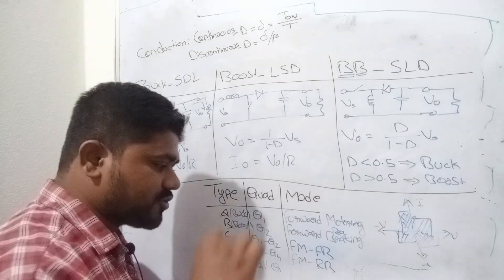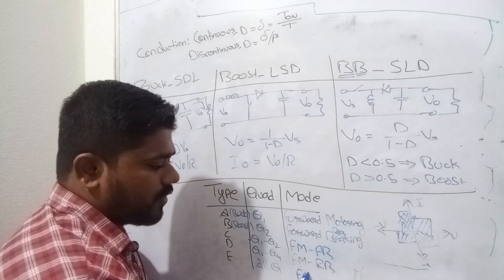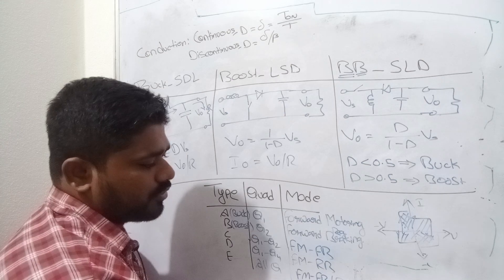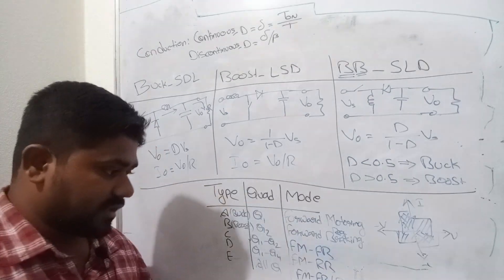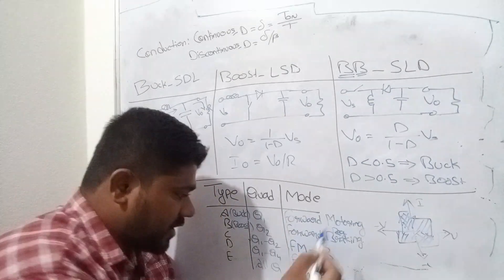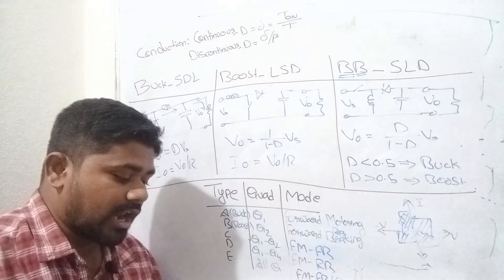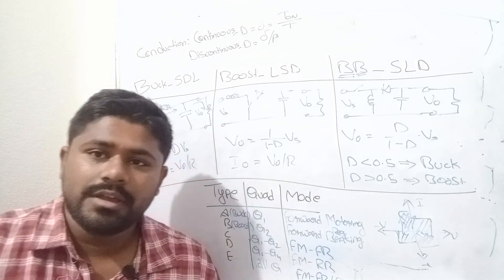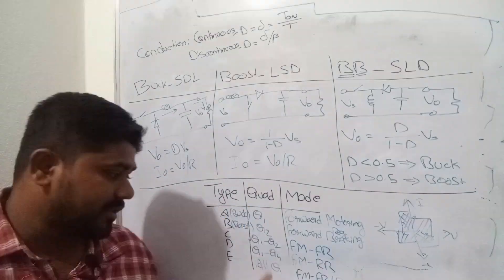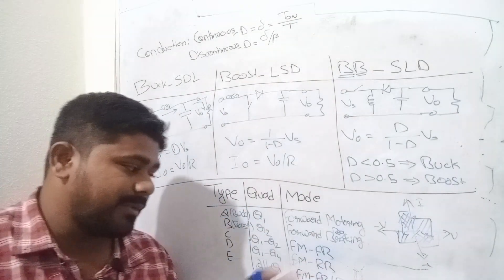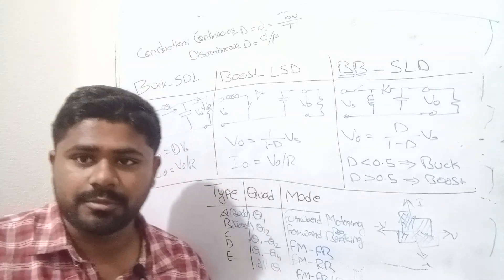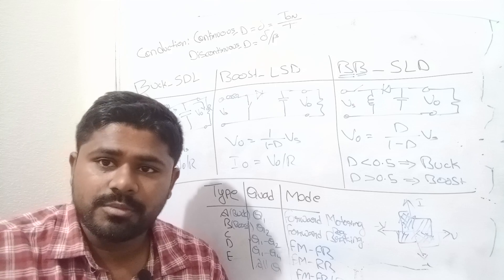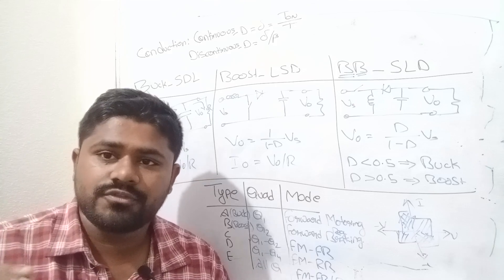For Type E chopper, all quadrants operate: forward motoring, forward braking, reverse motoring, and reverse braking. The reverse motoring quadrant is quadrant three. Only Type E chopper allows reverse motoring. These are all the most important formulas that are needed to be remembered from the topic of choppers.